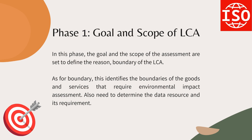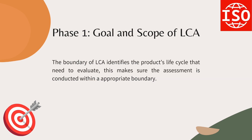Phase 1: Goal and Scope of LCA. In this phase, the goal and the scope of the assessment are set to define the reason and boundary of the LCA. For the boundary, this identifies the boundaries of the goods and services that require environmental impact assessment. It is also necessary to determine the data resources and their requirements. The boundary of LCA identifies the product's life cycle that needs to be evaluated, making sure the assessment is conducted within an appropriate boundary.